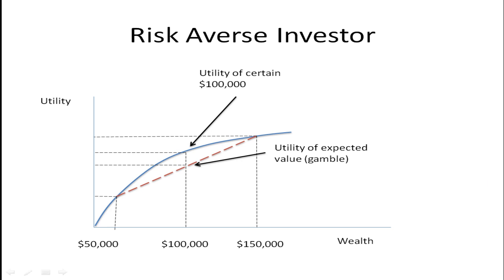If we look at a risk-averse investor, this blue line is their utility function. At each level of wealth they have a certain level of utility or satisfaction. At $50,000 they have a certain level of utility; at $100,000, a higher level; and at $150,000, an even higher level. You can see that going from $50,000 to $100,000 increased utility by more than going from $100,000 to $150,000.